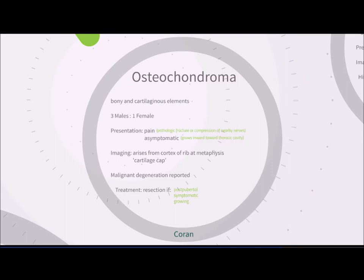Osteochondromas have both bony and cartilaginous elements but behave more like a cartilaginous tumor. There is a male preponderance of 3:1. Many patients present with pain due to pathologic fracture or nerve compression. Asymptomatic patients suggest the lesion is growing inward toward the thoracic cavity. On imaging, the tumor arises from the cortex of a rib, usually at the metaphysis, with a cartilage cap visible. They tend to be benign, but malignant degeneration has been reported. Treatment is resection, provided the patient is post-pubertal, symptomatic, or if the tumor is growing.